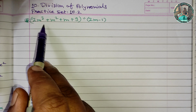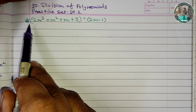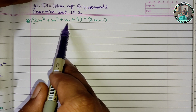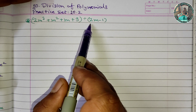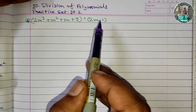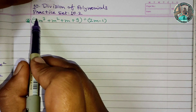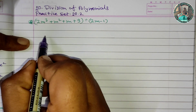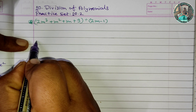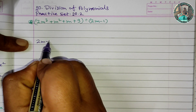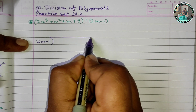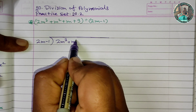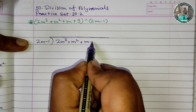How do we solve the division of polynomials? The question is: 2m cubed plus m squared plus m plus 9, divided by 2m minus 1. So this is our dividend and this is our divisor. We will now solve this division.